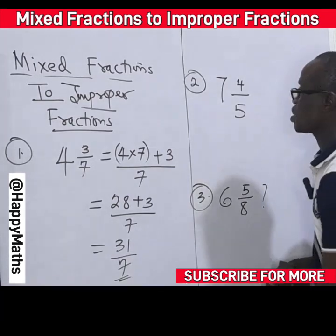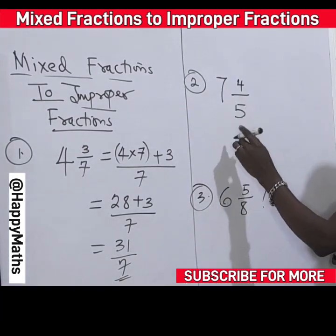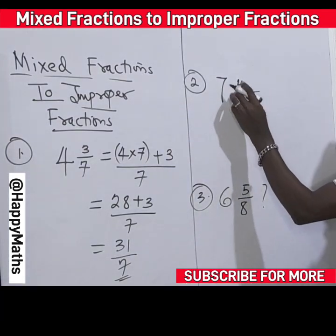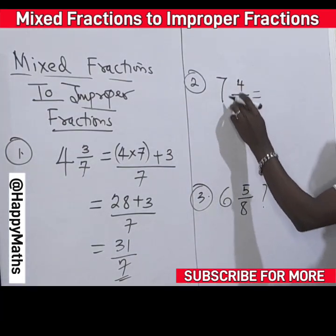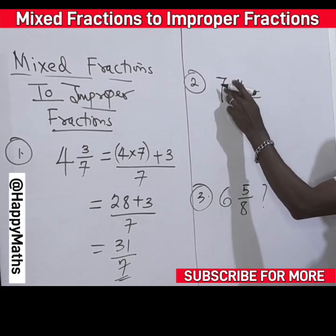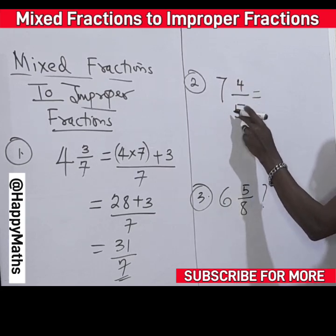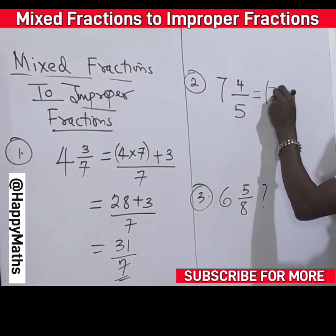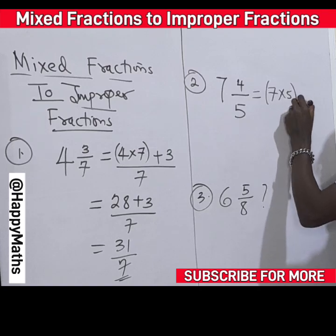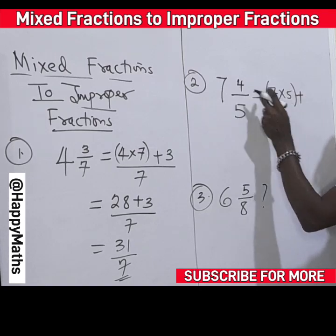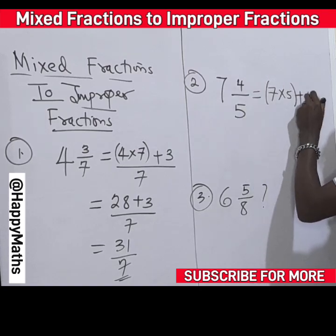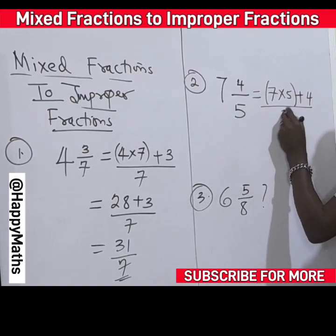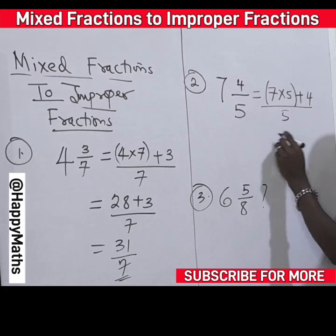This is an improper fraction. Now let's come here. This is 7 times 5 — the whole number times the denominator. 7 times 5 plus the numerator over the denominator.